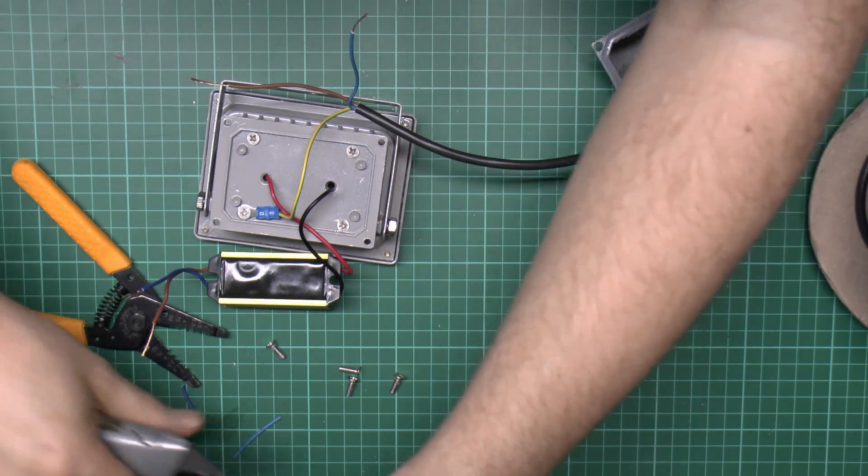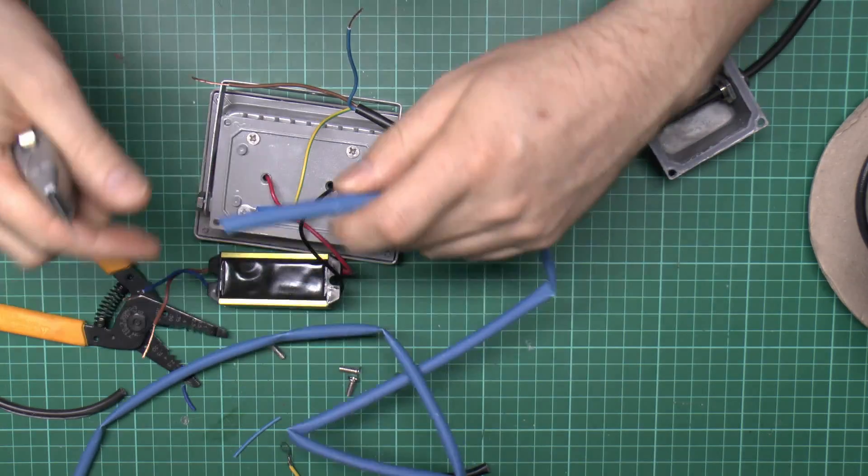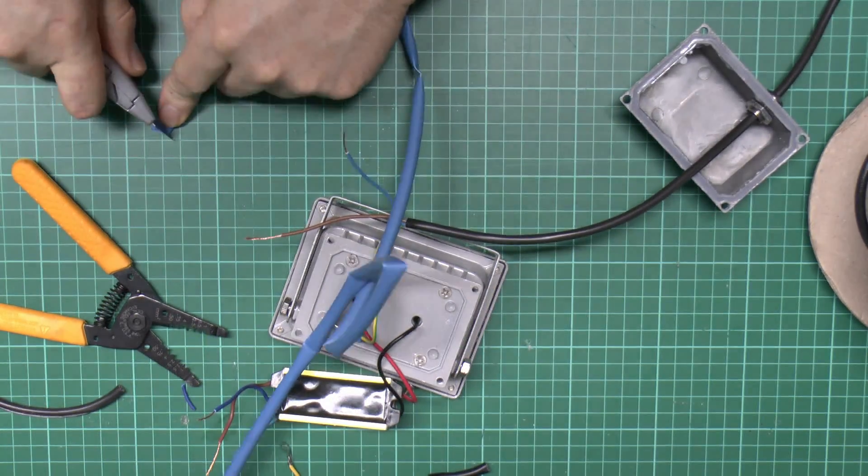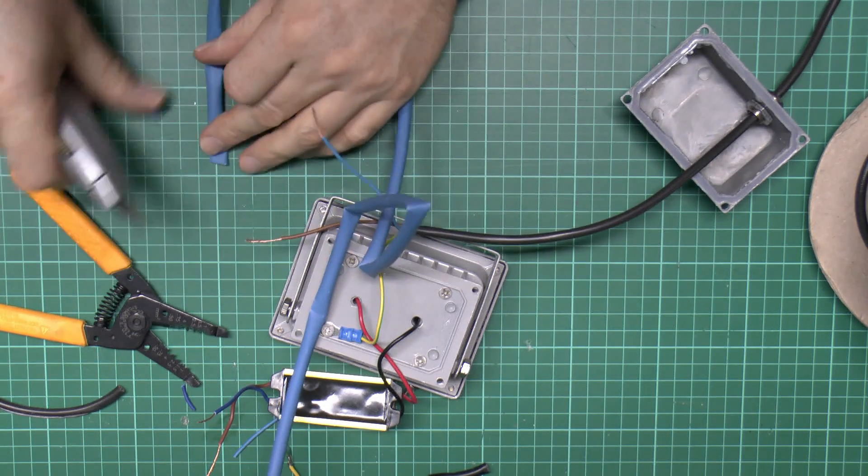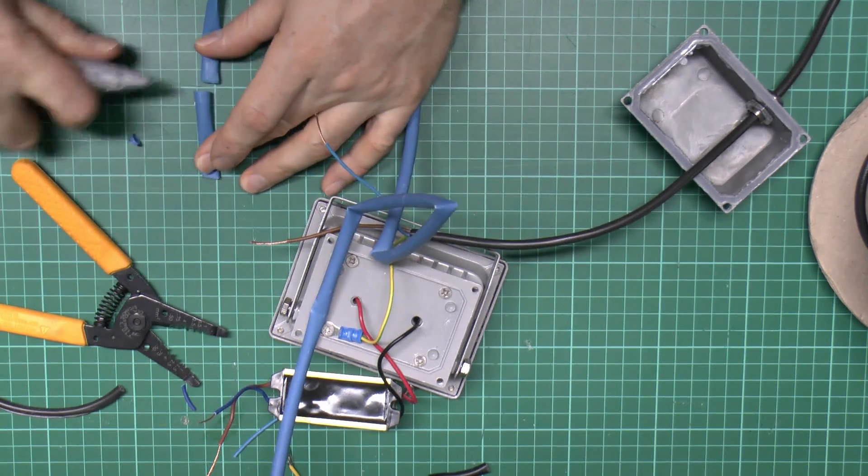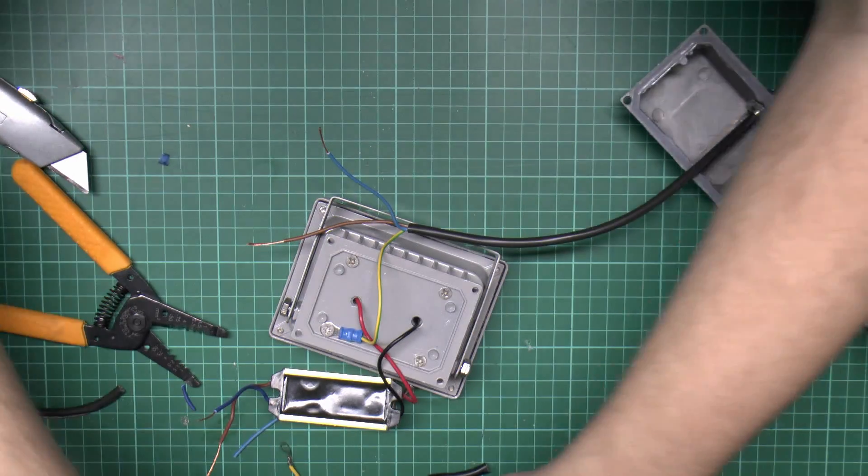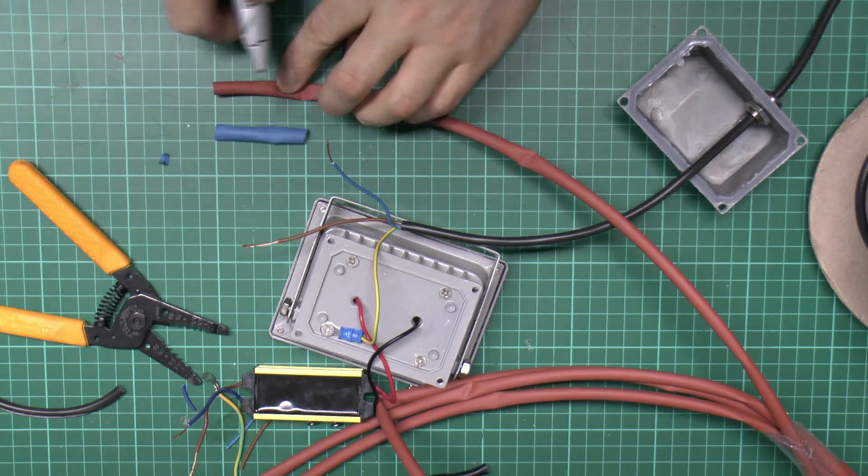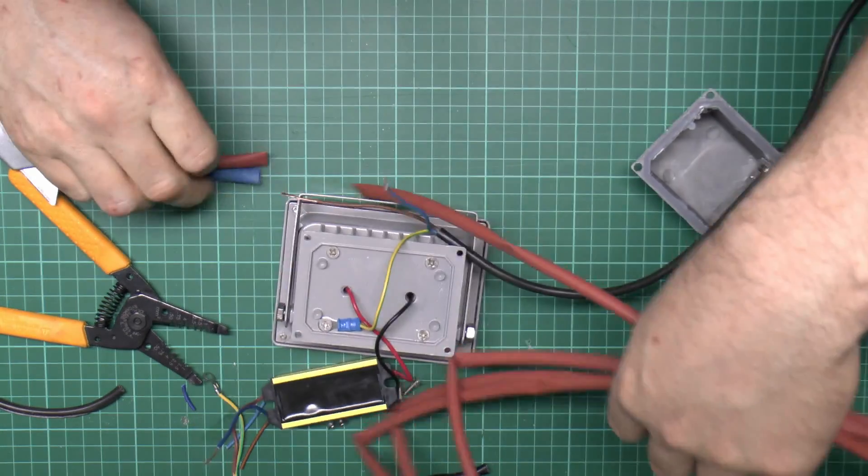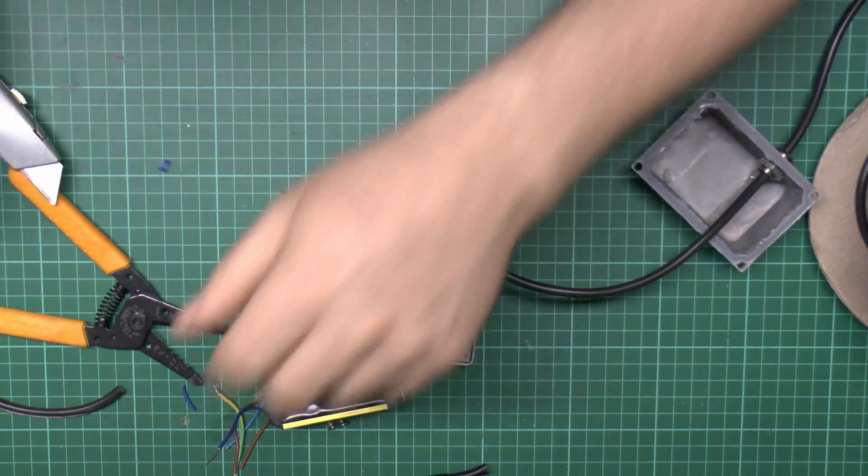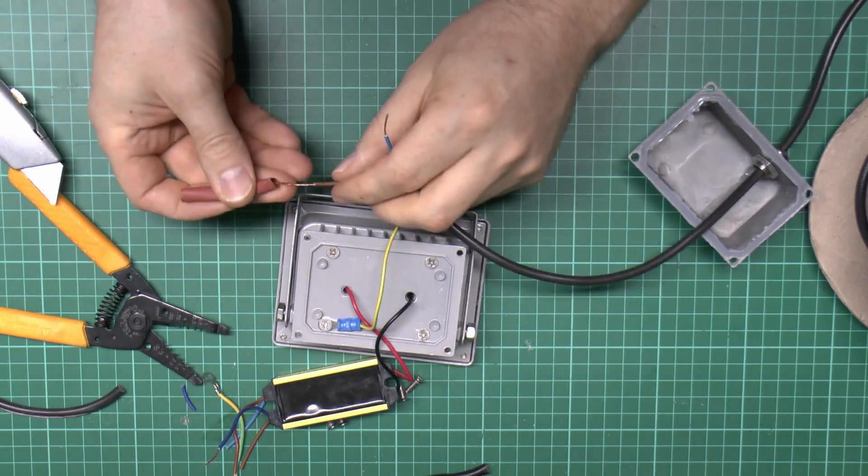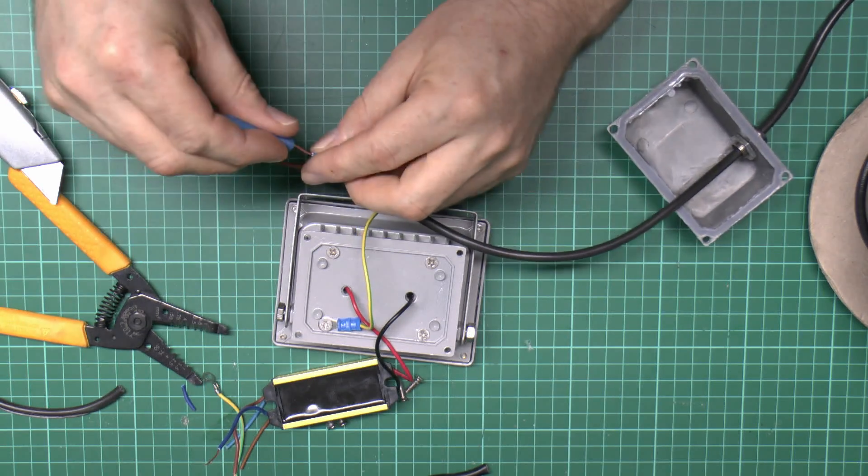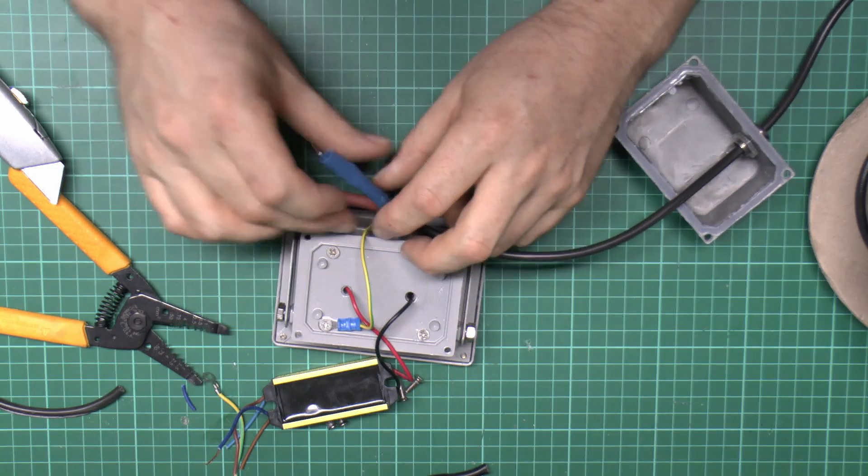What we've got here is some heat shrink sleeving. Here's some blue here. We just need to cut off a suitable length and trim that end so it's square. You could use any color, but because we can we're going to use the proper blue and brown color. Obviously you need to put this over the wires before soldering, not afterwards. I'm sure anyone who's done this sort of thing before has made that mistake before.